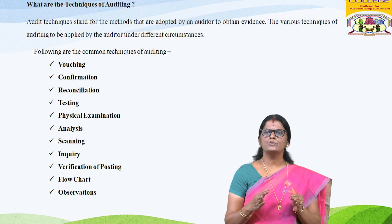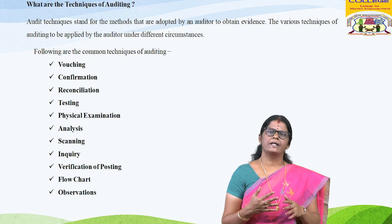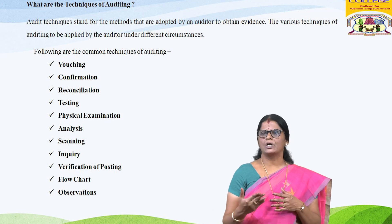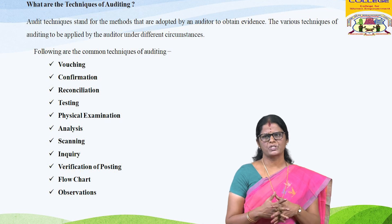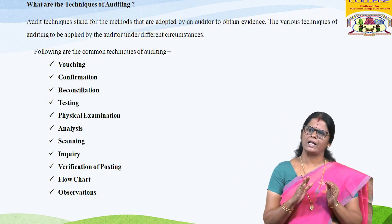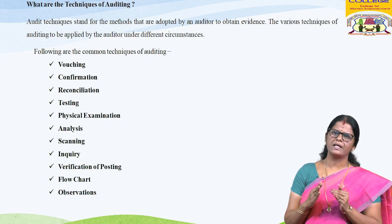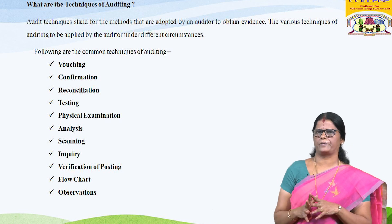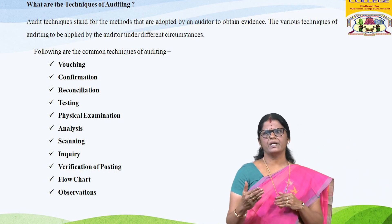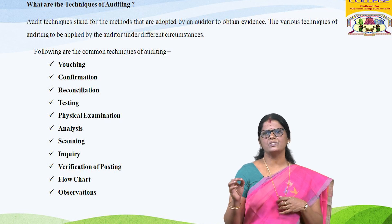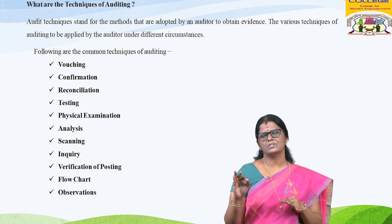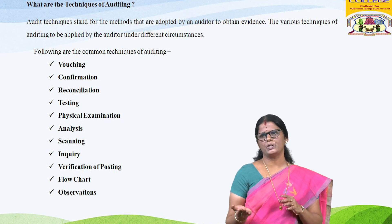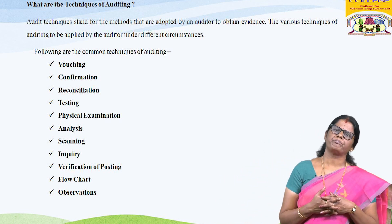Inquiry: this method is used to collect in-depth information about any transaction. Verification of posting: to verify postings from books of original entry to ledger accounts and confirm the balance. For example, to verify a sales book, an auditor may verify postings from the sales register to the sales ledger and calculate balances. Flow chart: this technique is used to determine the stage of a transaction and the generation of documents at all levels of transaction. Observation: through observation, an auditor gains an idea about the reliability of the processes and procedures of an organization.